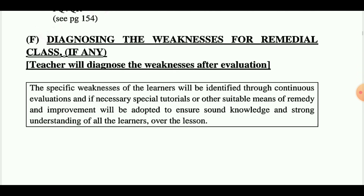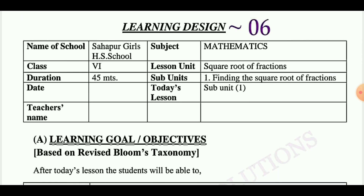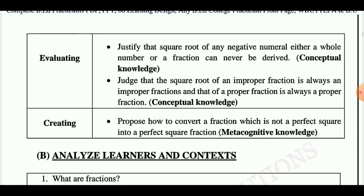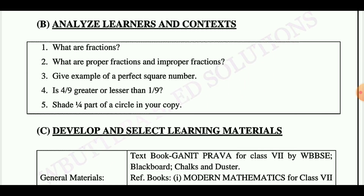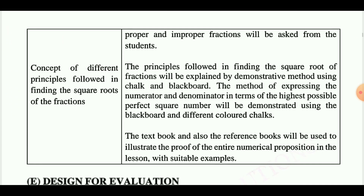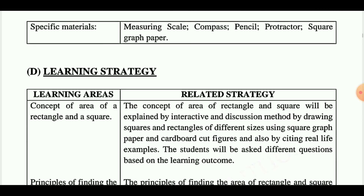Last point is diagnosing the weakness for remedial class. Learning design number six is taken from class six and today's lesson is finding the square root of fractions. Learning goals: the student will be able to remember, understand, apply, analyze, evaluate, and create. Next point is analyze learner and context — for analyzing the previous knowledge of students, you have to question them. Next, develop and select learning materials, learning strategy, design for evaluation, and diagnosing the weakness for remedial class if any.